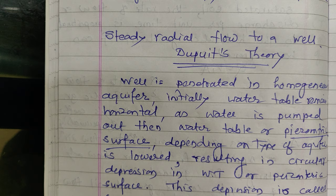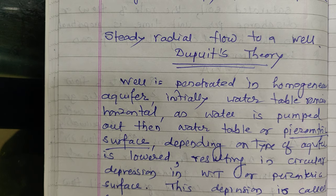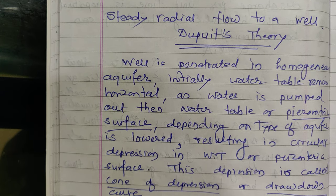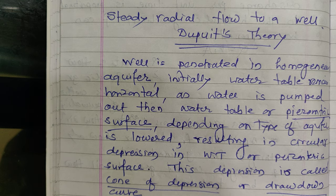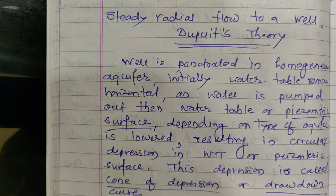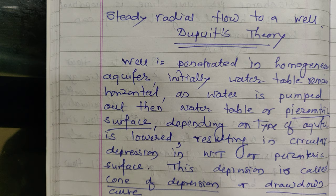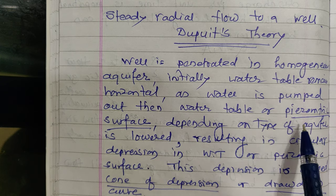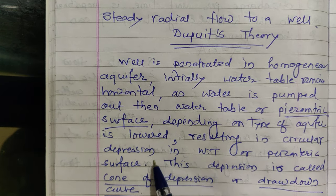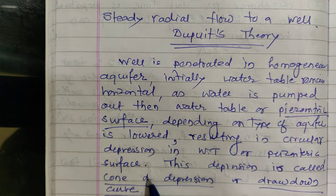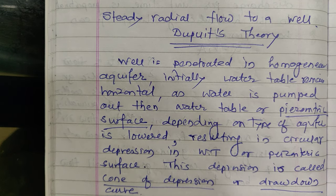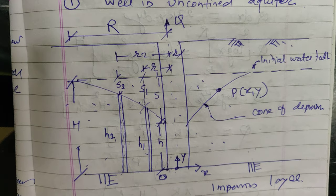Now we look at steady radial flow to a well. When a well is penetrated in a homogeneous aquifer, initially the water table remains horizontal. As water is pumped out, the water table or piezometric surface — depending on the type of aquifer — is lowered, resulting in a circular depression known as the cone of depression or drawdown curve.